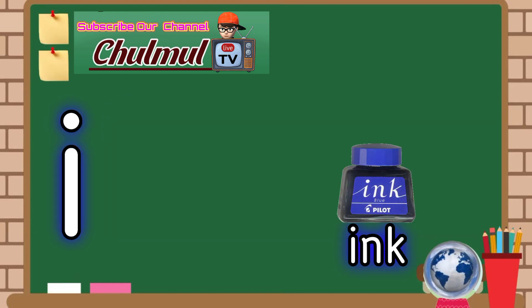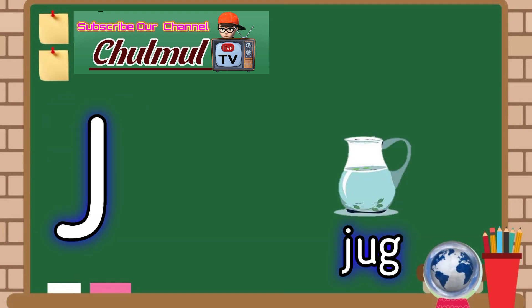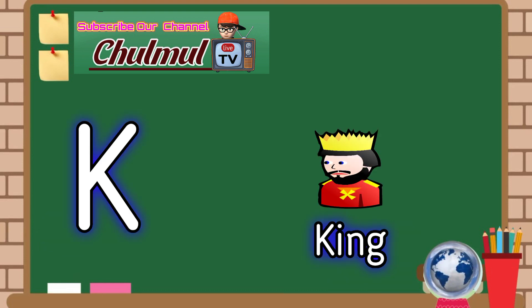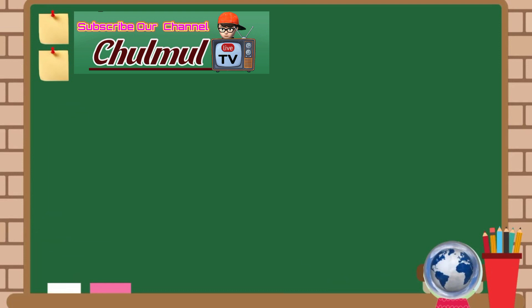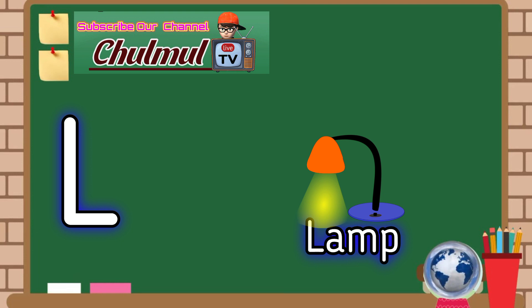O for ink, J for jug, K for king, L for lamb.